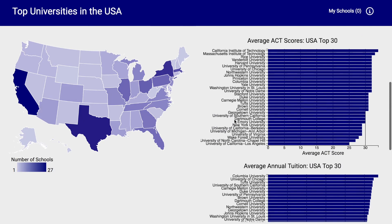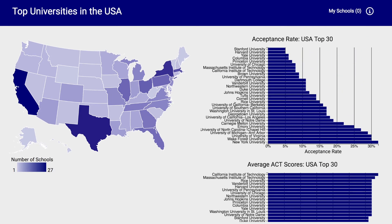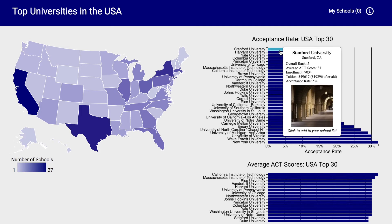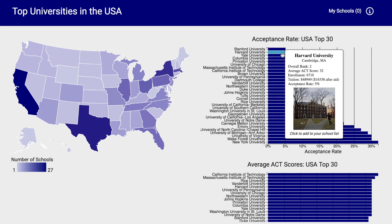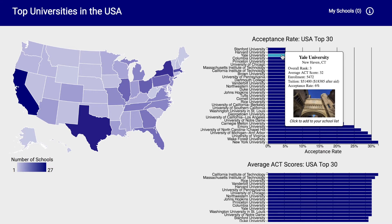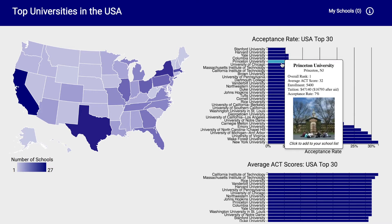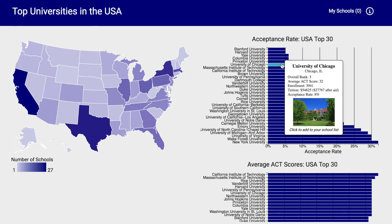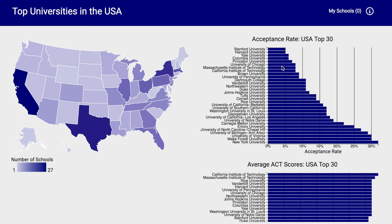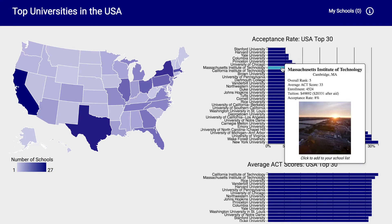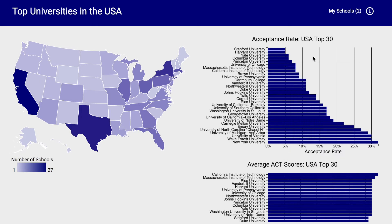In the charts, by hovering your mouse over the different sorted bars, you can get more information about each school, such as overall rank, ACT score, enrollment numbers, tuition both before and after financial aid, as well as acceptance rate. Also, by clicking on the school, you can add it to your list of schools, which will appear in the top right corner of the screen.